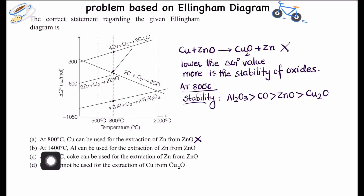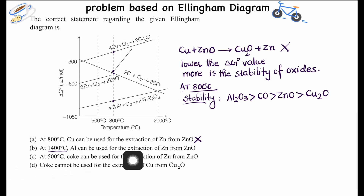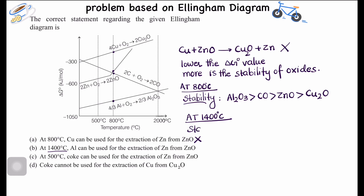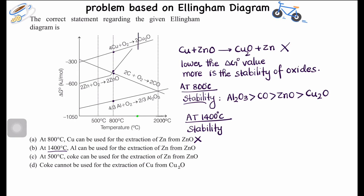The second option states that at 1400°C, aluminium can be used for the extraction of zinc from ZnO. We will now examine the stability order at 1400°C by drawing a vertical line at that temperature on the diagram.